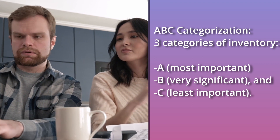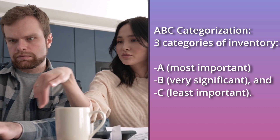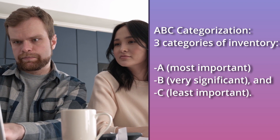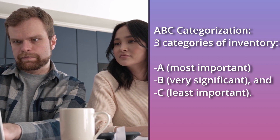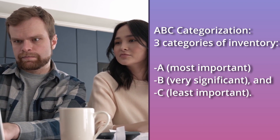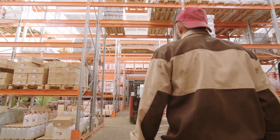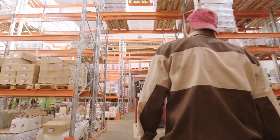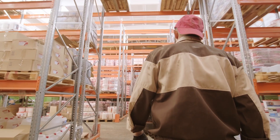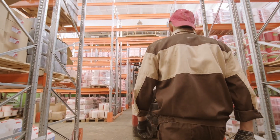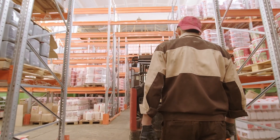Inventory is separated into three categories using the ABC Categorization System: A — Most Important, B — Very Significant, and C — Least Important. The idea that all inventory is not created equal is the foundation of an ABC Inventory Categorization System, or ABC Analysis.